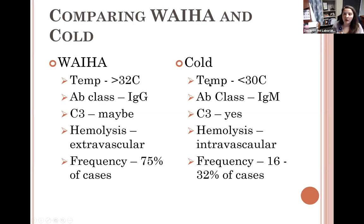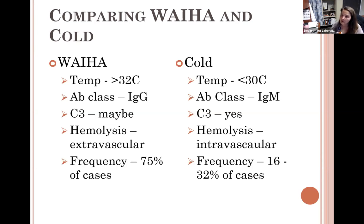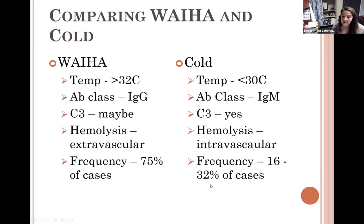Cold autoantibodies are usually positive for C3d. Think about the complement cascade: C3 convertase converts the C3 molecule into C3a and C3b. C3a is involved in inflammation; C3b attaches to the cell membrane. That is why monospecific AHG reagent has anti-C3b and C3d — C3d is a further breakdown product of C3b. Blood bank identifies complement presence using anti-C3b and C3d. Cold autoantibodies are usually pathologic, occurring following infections such as Mycoplasma pneumoniae or infectious mononucleosis.